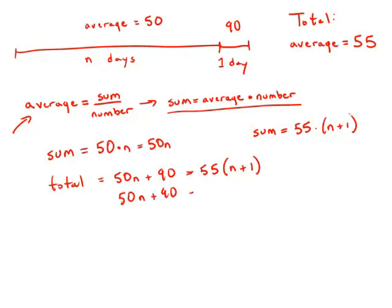We'll distribute on the right side: 55n plus 55. We will subtract 50n from both sides. And then we will subtract 55 from both sides.